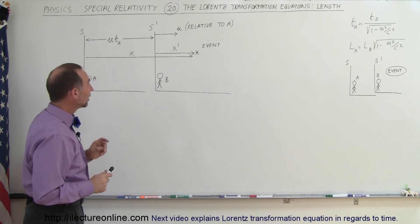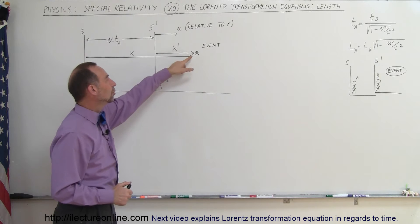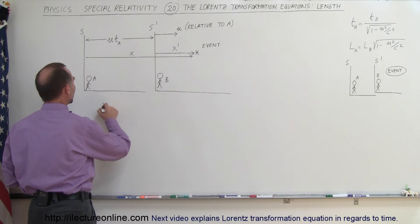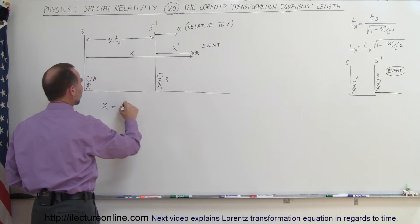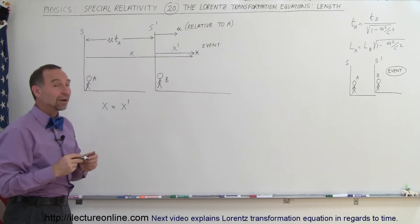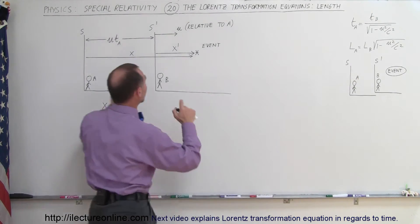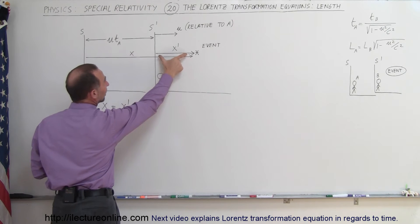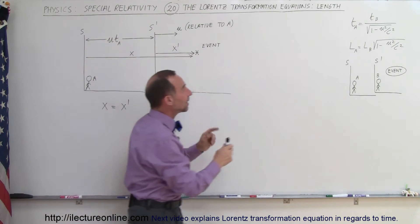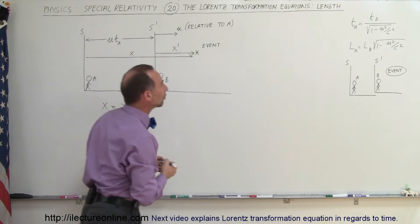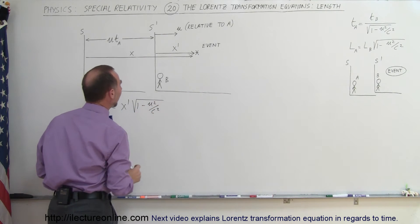Now, what is the distance as measured by A to the event in relation to the distance as measured by B to the event? X, the distance as measured by the observer in the stationary reference frame, is equal to the distance as measured by the observer in the moving reference frame. However, since the observed lengths differ between the two observers, A will not observe B's length X' directly — it will appear as X' times the square root of 1 minus U² over C².